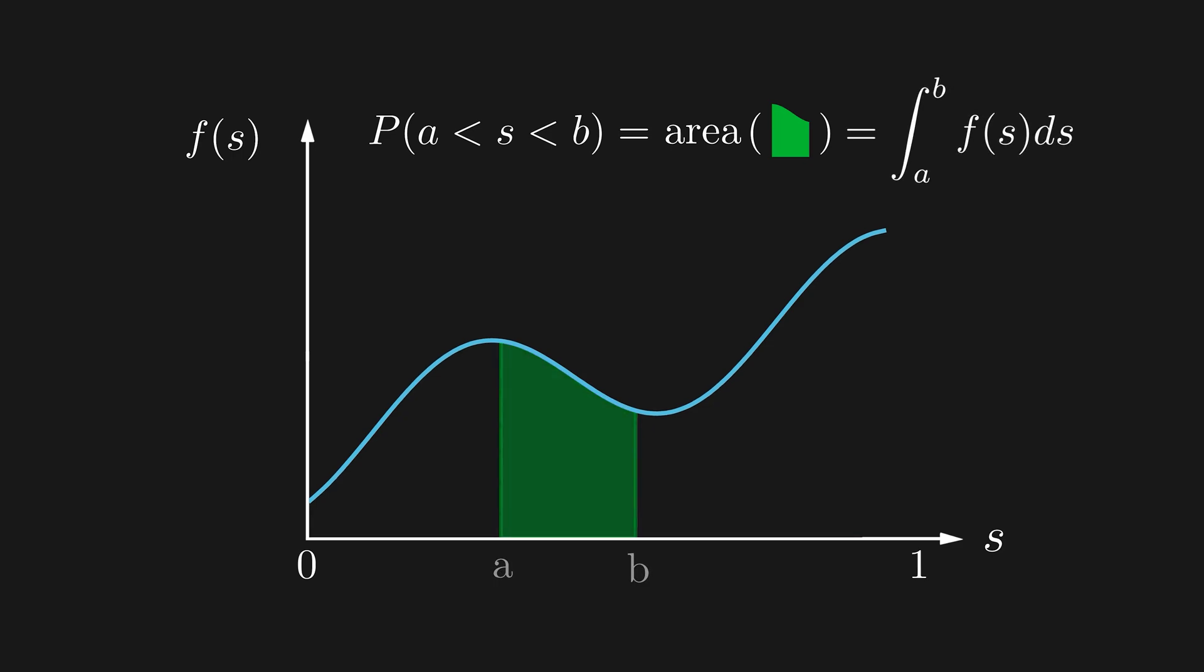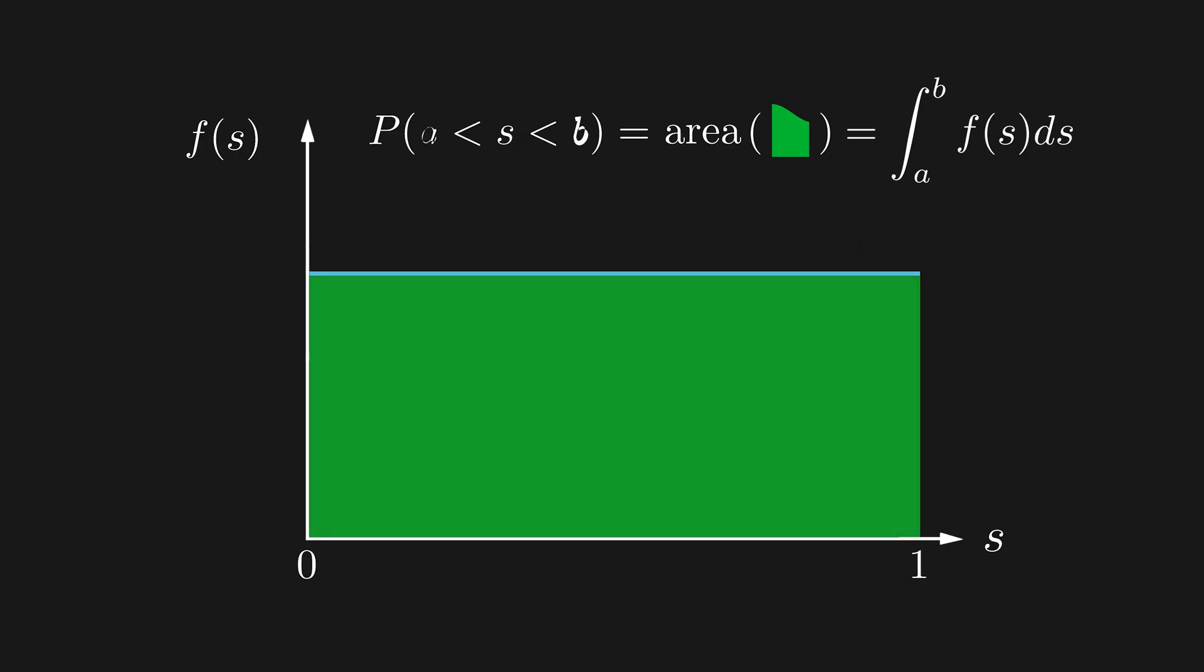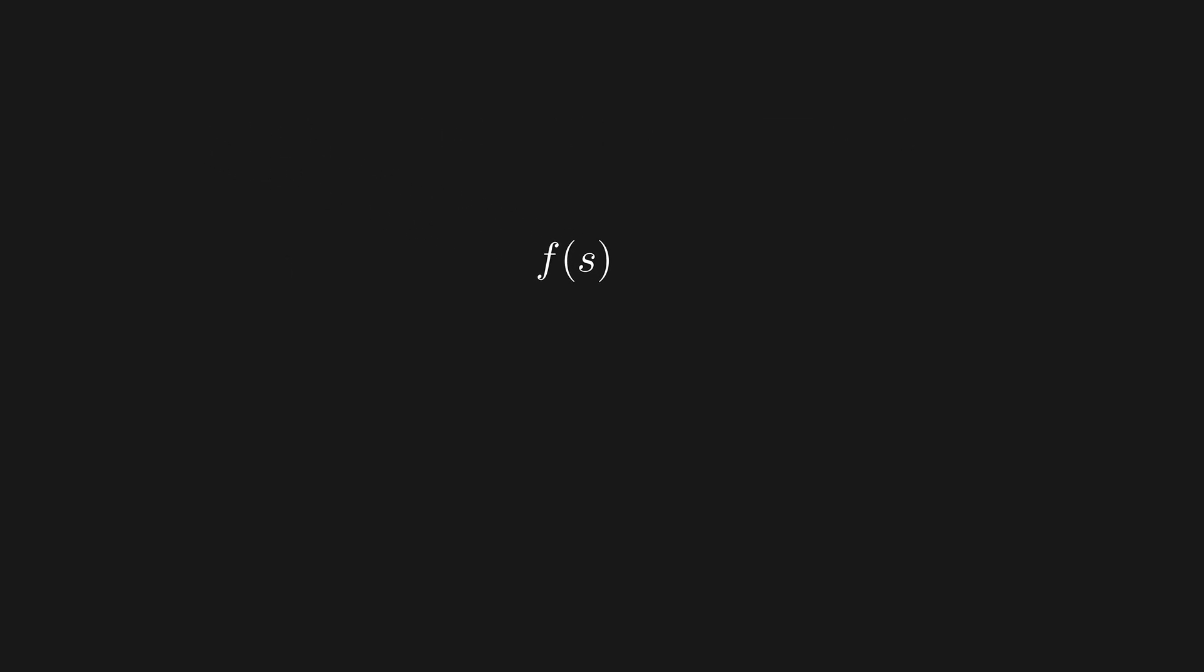In our case, every arc length is equally likely, so our function will be constant. To find the height, we notice that the total area must be one, since it's guaranteed we'll choose some arc length, and the width of this rectangle is one, so the height must also be one. This means f of S equals one, so we can substitute that into our formula, and we end up with the integral from 0 to 1 of 2s times 1 minus S ds. This works out to be one-third.